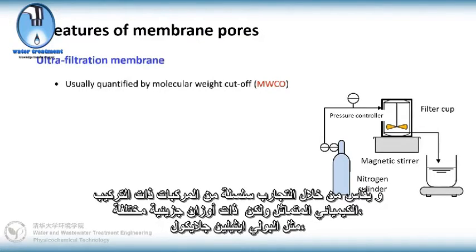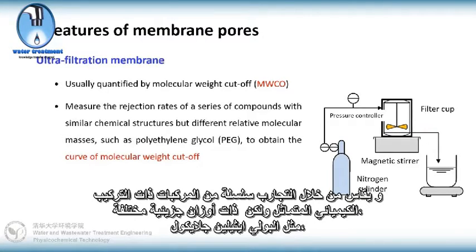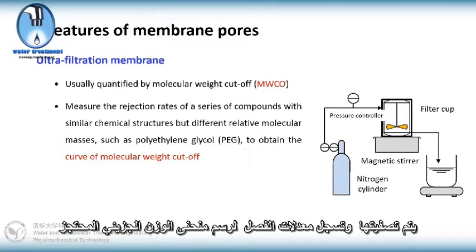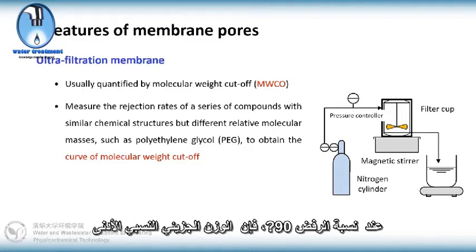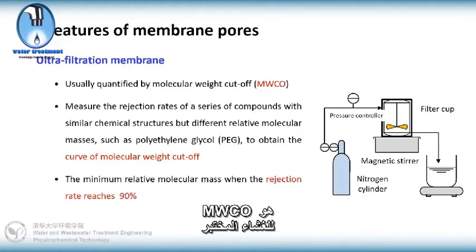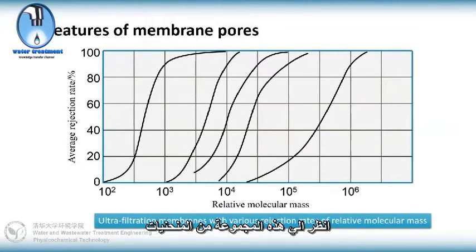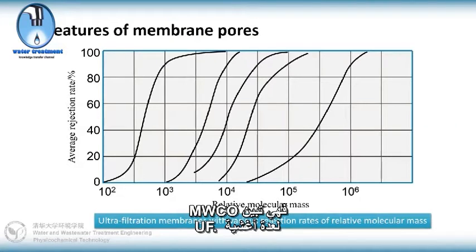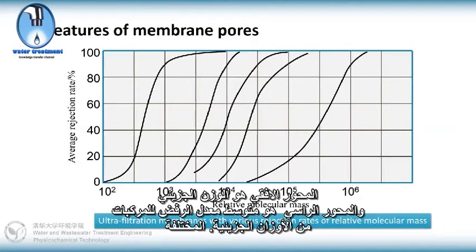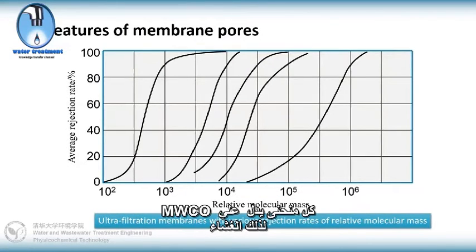MWCO is measured through experiments. A series of compounds with similar chemical structures but different molecular weights — like polyethylene glycol — are filtered, and the rejection rates are recorded to plot a molecular weight cutoff curve. The x-axis is molecular weight and the y-axis is the average rejection rate for compounds of various molecular weights. Each curve tells the MWCO of that membrane.